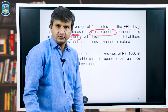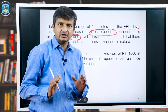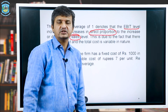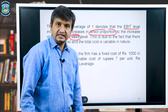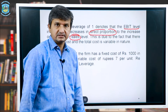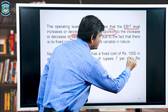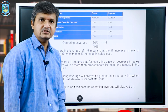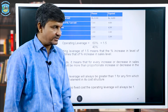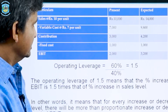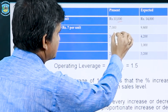Why does this happen? Because there is no fixed cost element in the cost structure. So the first rule: whenever there is no fixed cost in the cost structure, the operating leverage will always be 1. Now let's take an example with a fixed cost of rupees 1,000 and see what happens.